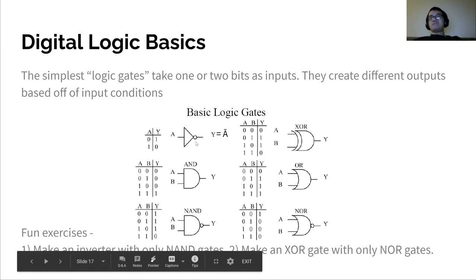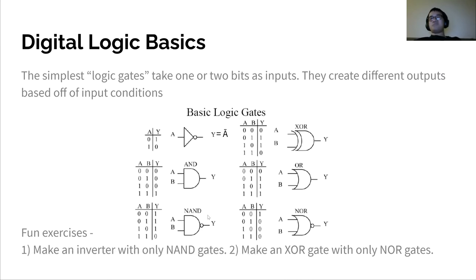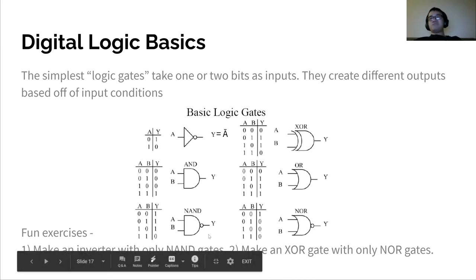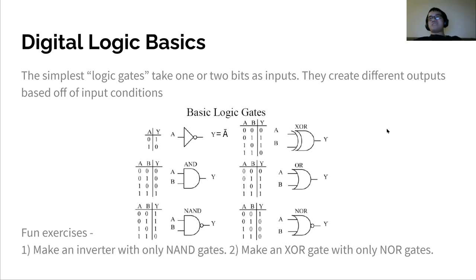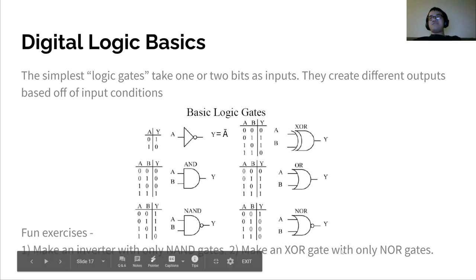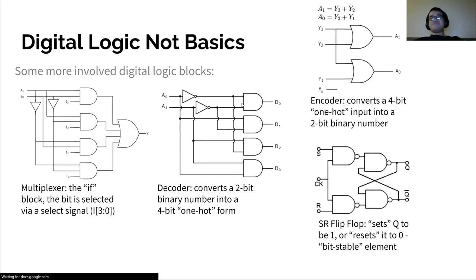Here are some of the basics of digital logic: logic gates. These basically create a different output based off of the input values they get — they're kind of like transistors but a little bit higher level. You can see six of the basic ones right here and how they react to different inputs. NOT will invert the signal, AND will check if they're both ones, NAND will check if they're both ones and then flip them. There are some fun exercises at the bottom that you can think through later.